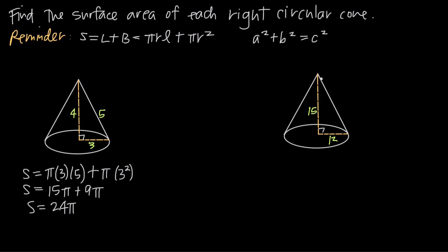What we need to realize is that we can use the Pythagorean theorem to find the slant height. Because we actually have a right triangle, where one leg has length 15, one leg has length 12, and the hypotenuse of the triangle is unknown. Since it's a right triangle with a 90 degree angle, we can use the Pythagorean theorem: a² + b² = c², where c is always the hypotenuse. So we'll say a is 15 and b is 12.